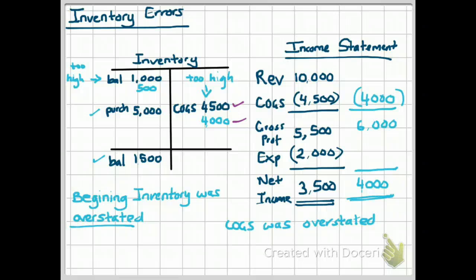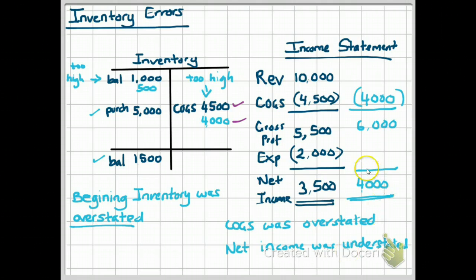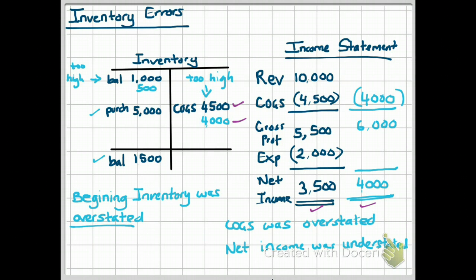How about gross profit and net income? Net income was understated — it should have been $4,000, but because of the error, we said net income was $3,500. So if your beginning inventory was overstated, then your cost of goods sold would have been overstated and your net income and gross profit would have been understated — by the amount of the error, which was $500.